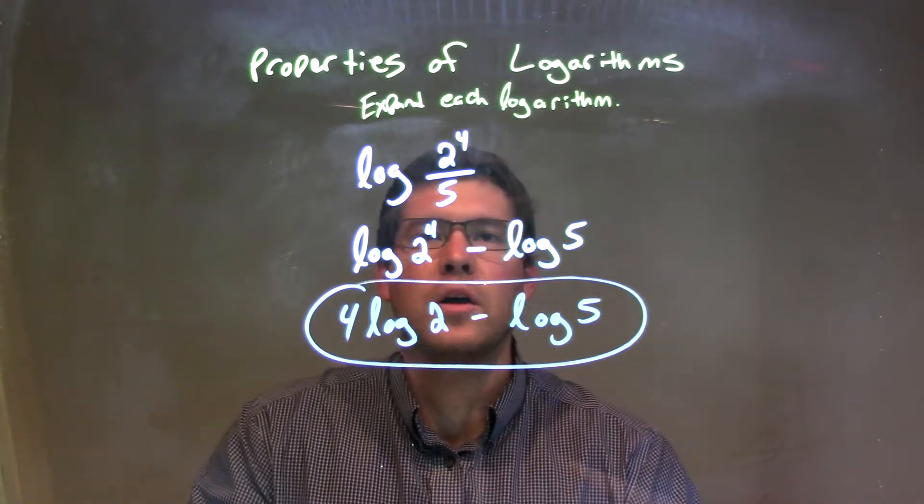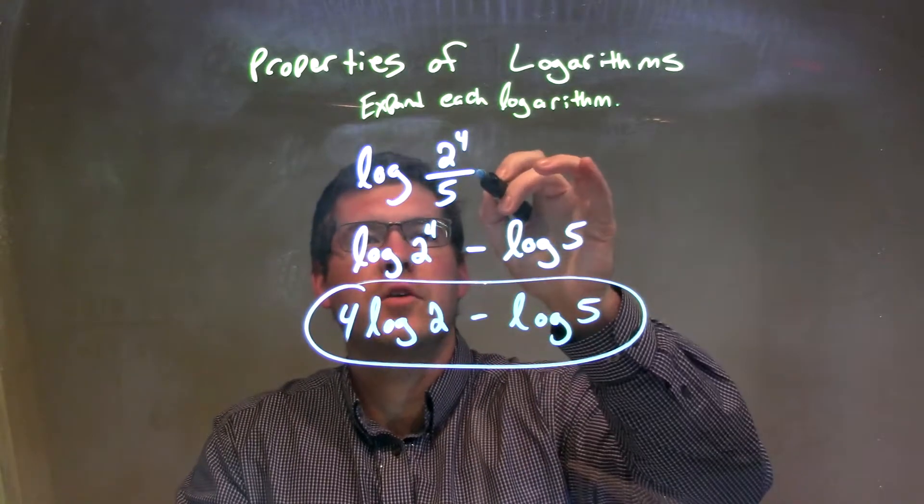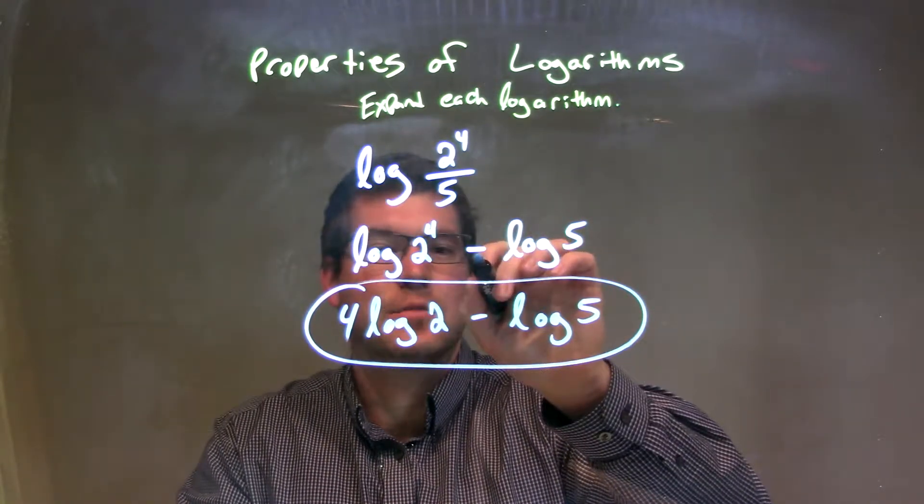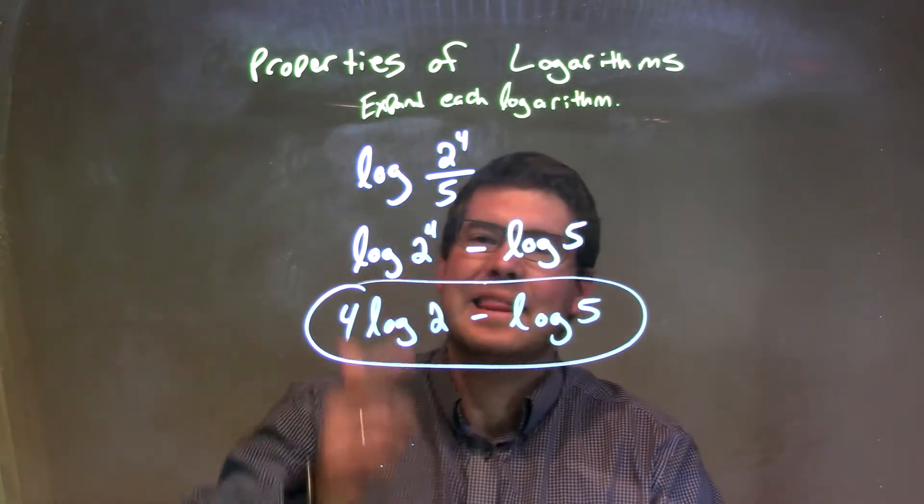Let's recap. We're given log of 2 to the 4th over 5. Division, when we separate it into two different logarithms, is the same thing as subtraction. So we have log of 2 to the 4th minus log of 5.